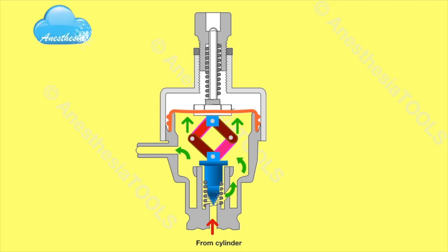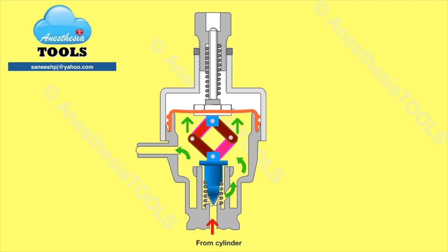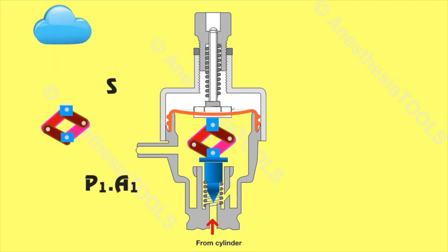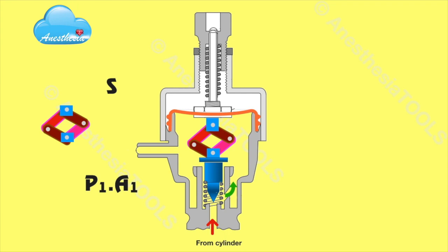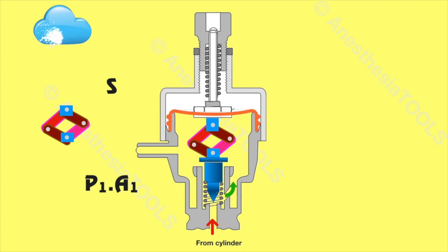As the diaphragm rises, its attachment to the reversal linkage causes a downward movement of the valve seat, closing the valve and interrupting the flow of gas from the cylinder. If gas is permitted to exit via the outlet nozzle, the slight fall in pressure reduces the upward force on the diaphragm, permitting the valve seating to rise and thereby allowing more gas to enter the chamber from the cylinder. The outlet pressure is maintained more or less constant at a level set by adjusting the tension in the tensioning spring.